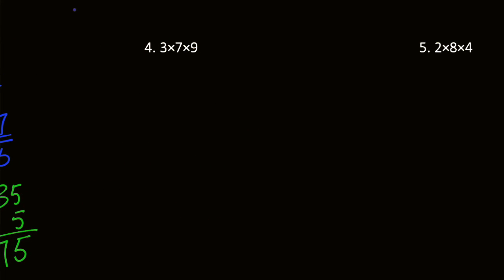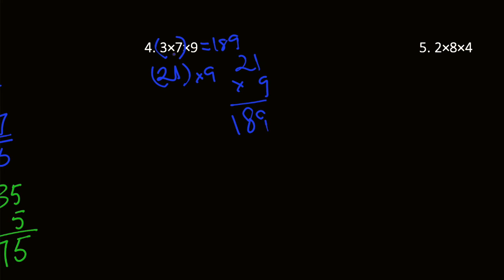As you keep doing this, it'll get easier and easier, but it helps if you know your multiplication facts. Here we have 3 times 7 times 9. Let's group 3 and 7, which gives us 21. Then 21 times 9: 1 times 9 is 9, and 2 times 9 is 18, so we get 189. If I grouped 9 and 3 or 7 and 9, we would still get the same thing because of the associative property.